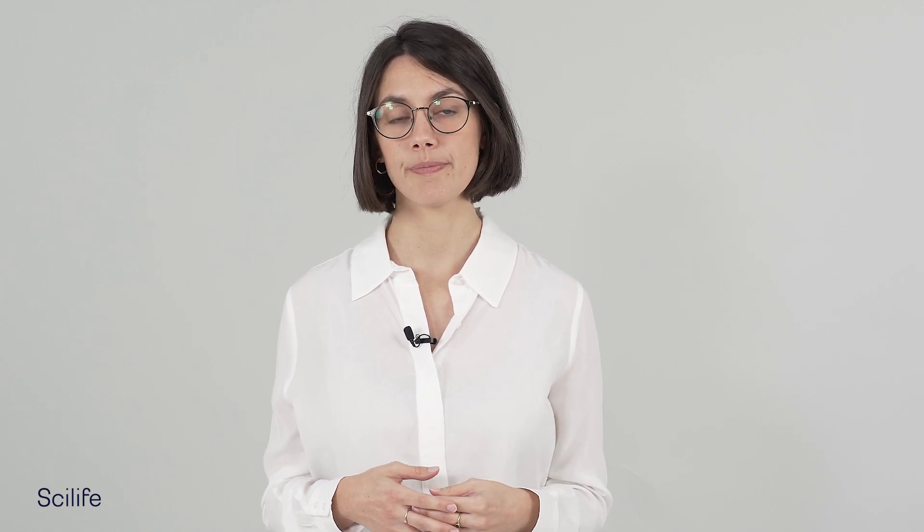They are applicable to the European Economic Area, Liechtenstein, Norway, Iceland and all countries with a mutual recognition agreement, including Switzerland, Canada, Australia, New Zealand, Japan and the UK. The GDP guideline is divided into 10 chapters.